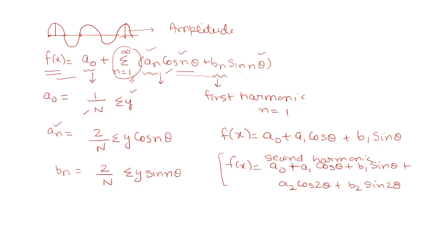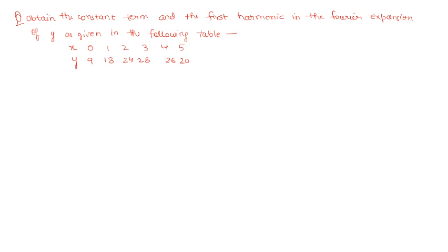The amplitude is essentially the magnitude, so you take a₁ and b₁ and find their magnitude — that is your amplitude. Now let's see with the help of a question how we can apply these formulas and find the first harmonic. The question asks you to find the constant term and the first harmonic in the Fourier expansion of Y.